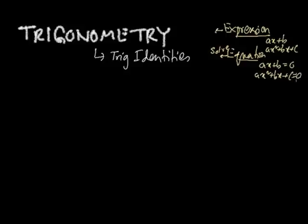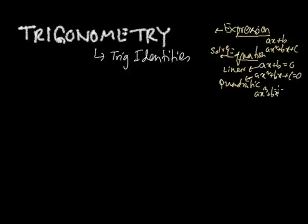The quadratic equation looks like ax squared plus bx plus c equals zero. Of course, it can have a number instead of zero, but we can always bring it to the left side. Among the common types in the syllabus are the linear, quadratic, and cubic expressions — ax cubed plus bx squared plus cx plus d equals zero — and among them is the trigonometric expression.